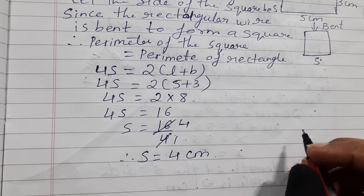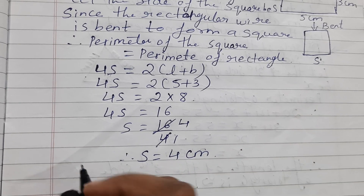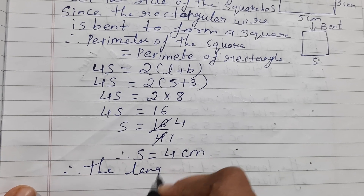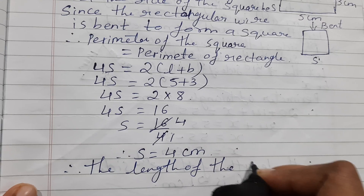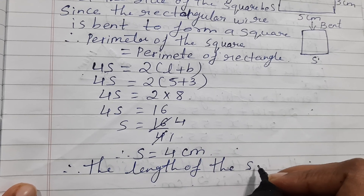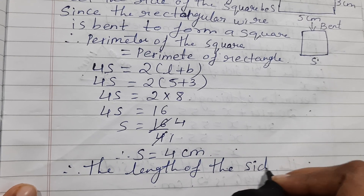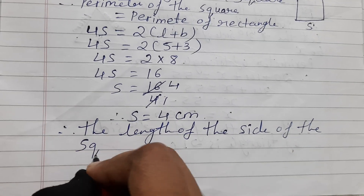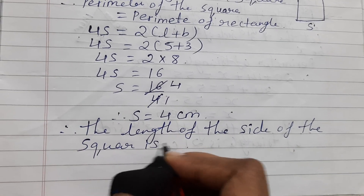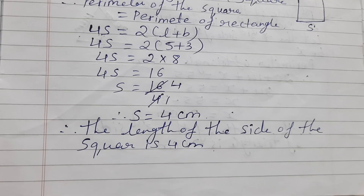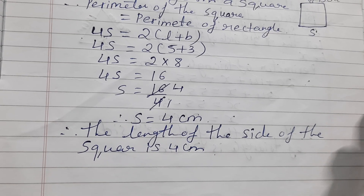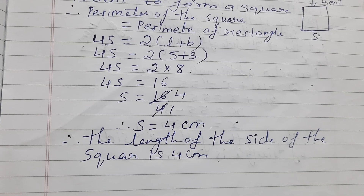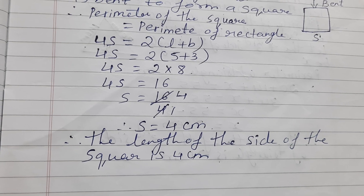Therefore, the length of the side of the square is 4 centimeters. I hope you all have understood how to solve this problem. Thanks for watching. If you have any doubts or queries, you can comment below. Don't forget to like, subscribe to my channel, and share with your friends. Press the bell icon for more updates.